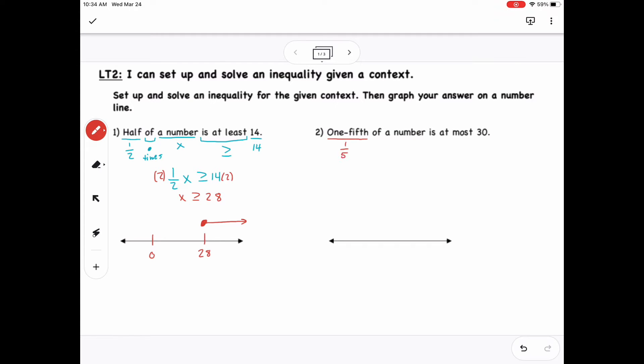It says one-fifth, so that's a fraction of one-fifth, of is still multiplication. A number we'll use is x. Here, is at most would be less than or equal to, and then 30.